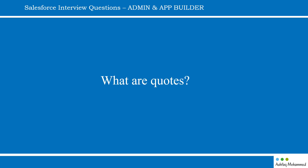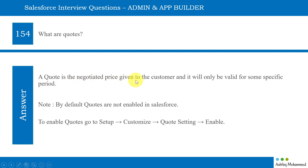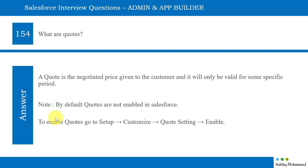What are quotes? A quote is a negotiated price given to the customer and it will only be valid for a specific period — I've seen a lot of quotes valid for 30 days. A quote is when you are selling some products to a customer and they ask for a discount. You negotiate the price with the customer and give them a final price that the customer agrees to pay — that information can be created and sent to the customer using quotes. By default, quotes are not enabled in Salesforce. To enable quotes, go to Setup, then Quotes Settings, and enable it.